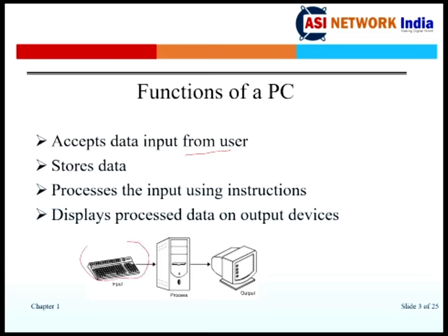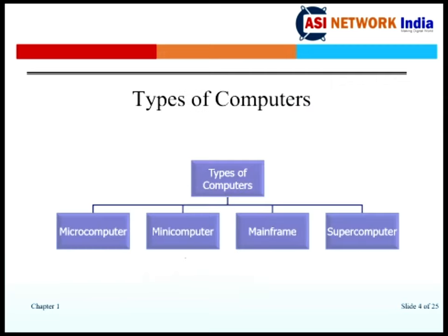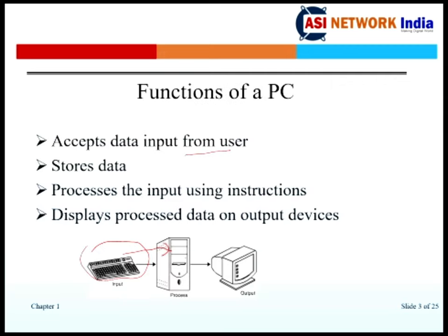The computer accepts data coming from the user. Whenever you press a key from the keyboard, it is forwarded to the central processing unit. The CPU has the job to process the input coming from the user side and then transfer it to the output device, which is displayed on the screen. So it processes the input using some instructions, and the output is displayed.